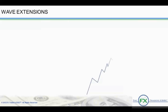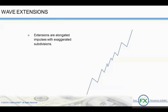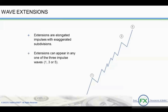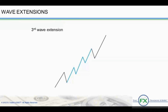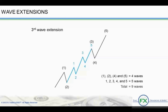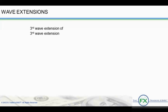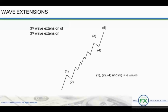When the impulse wave seems to go on and on, it is called an extension. Extensions are elongated impulses with exaggerated subdivisions. Extensions can appear in any one of the three impulse waves — 1, 3, or 5. However, wave 3 extensions are the most common since it is usually the strongest and the longest impulse wave. In this example, the third wave extension is a nine-wave sequence. Within this five-wave sequence, wave 3 extends into another five-wave sequence. In another example, the third wave has two extensions, known as a third wave extension of a third wave extension — the extension occurs within an extension. This extension is a 13-wave sequence, and within the initial five-wave sequence, wave 3 extends twice.